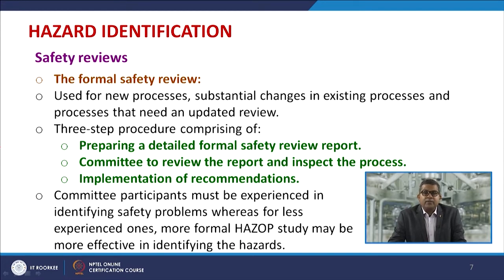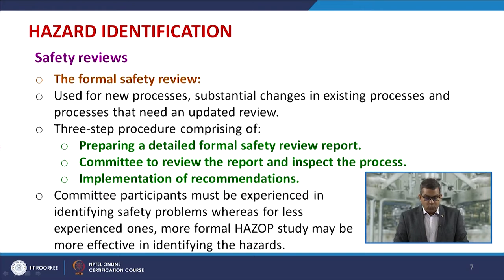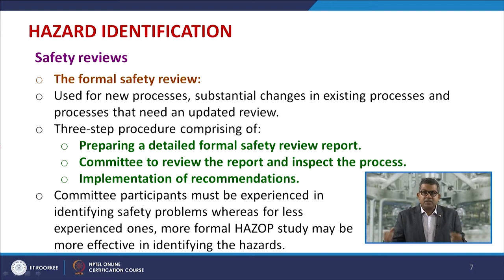The formal safety review is used for new processes, substantial changes to existing processes, and processes that need an updated review. This usually consists of three steps: preparing a detailed formal safety review report, having the committee review that report and inspect the process, and implementing whatever recommendations are given by the safety review committee, ensuring those recommendations are properly implemented.